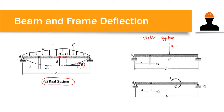If we wish to compute for the slope at point C, instead of using a one-unit concentrated load, we use a one-unit couple load — an external moment. So to summarize: to compute for deflection, place a one-unit concentrated load at the concerned point; to compute for the slope, use a one-unit couple load at the concerned point.